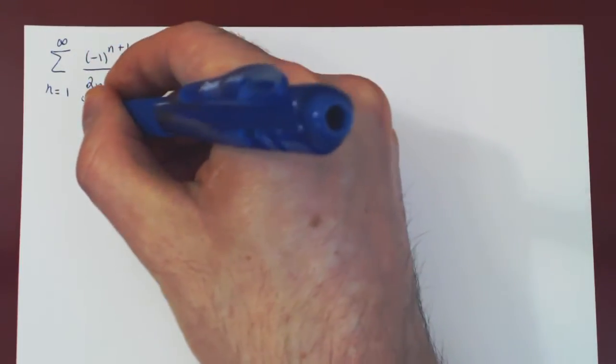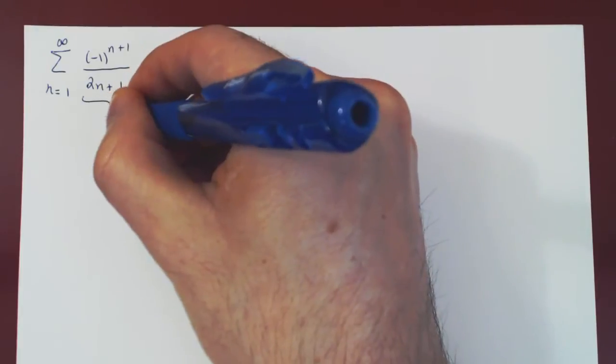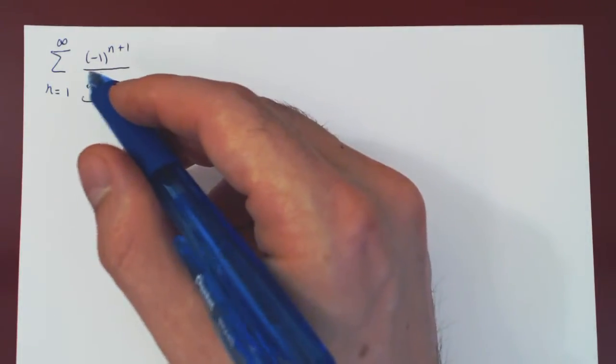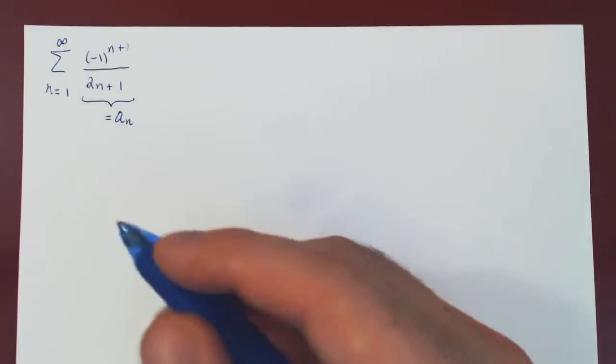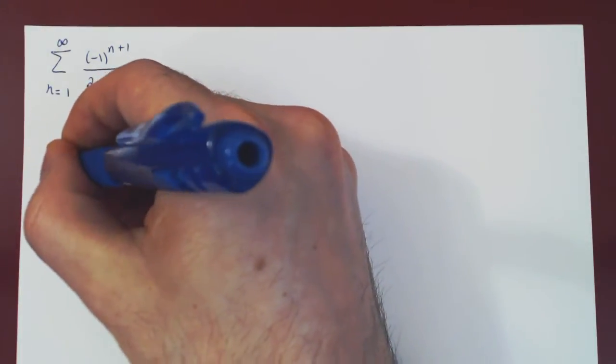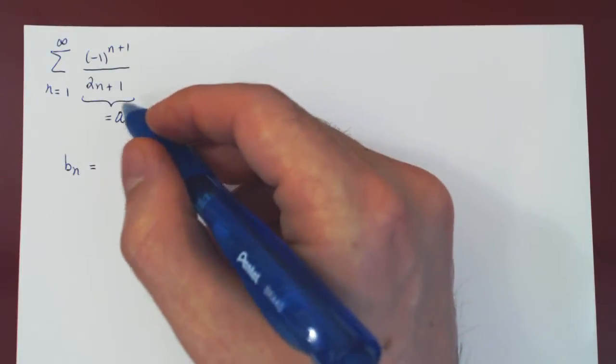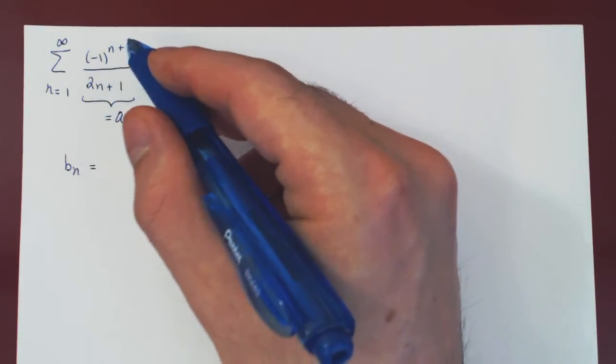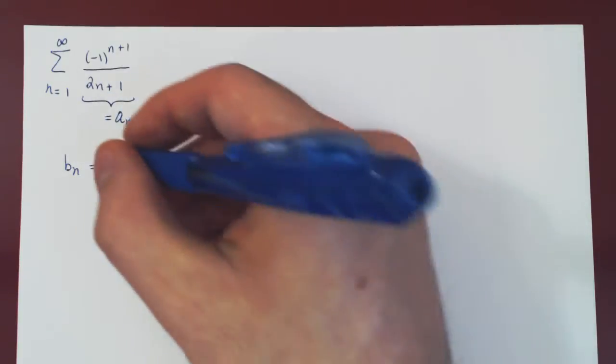So here is An, the sequence of terms we're summing over, and when we deal with an alternating series we simply have to look at Bn, the positive part of An, therefore ignoring the alternation. So Bn will therefore be 1 over 2n plus 1.